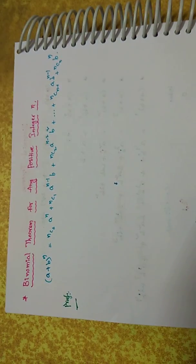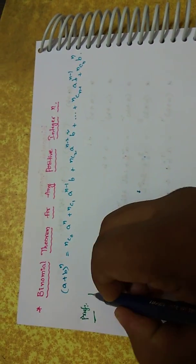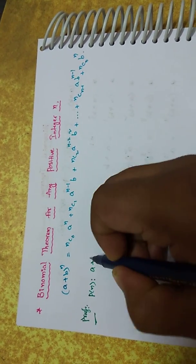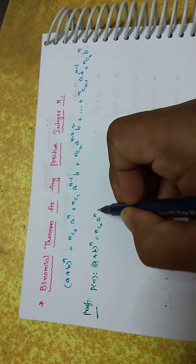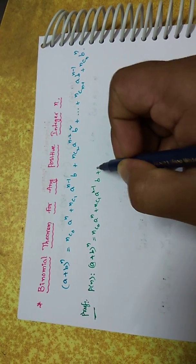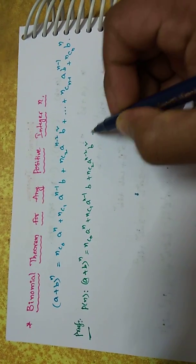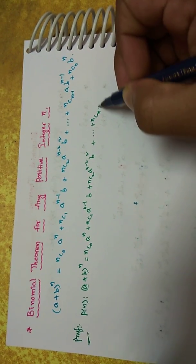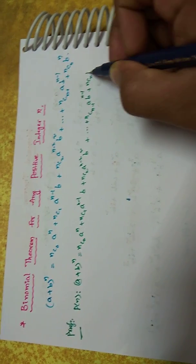This statement can be proved by using mathematical induction. Let P(n): (a + b)^n = nC0 * a^n + nC1 * a^(n-1) * b + nC2 * a^(n-2) * b^2 + ... + nC(n-1) * a * b^(n-1) + nCn * b^n.